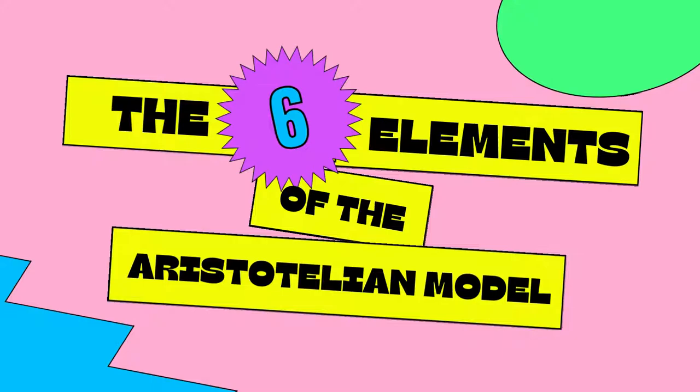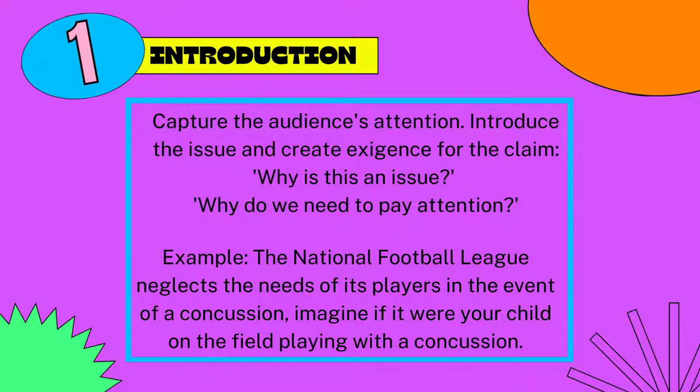Now we'll be talking about the six elements of the Aristotelian model. The first one is the introduction. Capture the audience's attention, introduce the issue, and create exigence for the claim. Why is this an issue? Why do we need to pay attention? For example: the National Football League neglects the needs of its players in the event of a concussion. Imagine if it were your child on the field playing with a concussion.